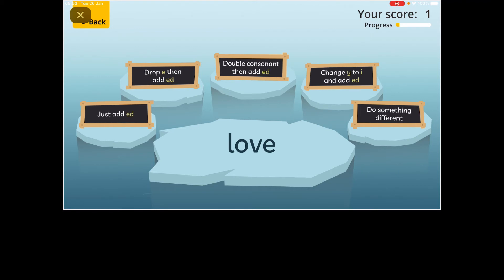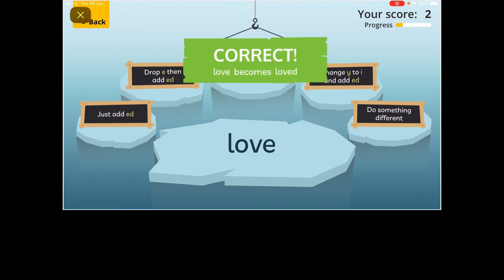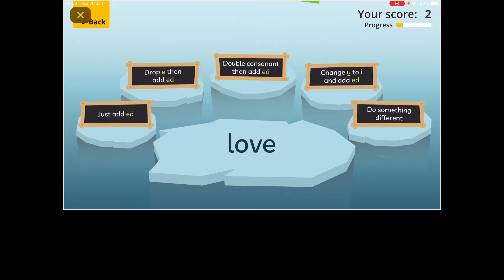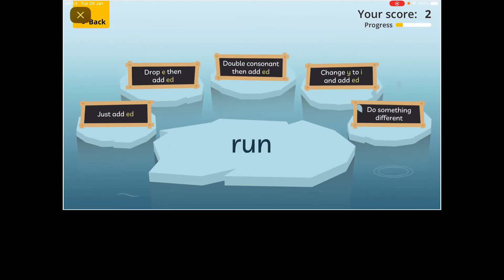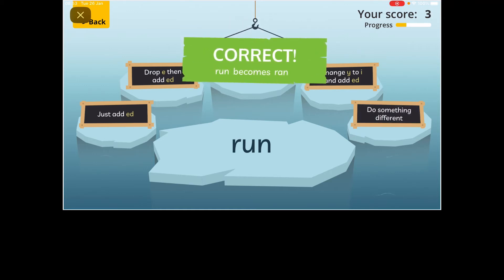Love - I love chocolate, I loved chocolate. There is an E, so we drop the E and put the D on the end. Running - I was running very fast. It changes to ran, it's a new word, so it's do something different.